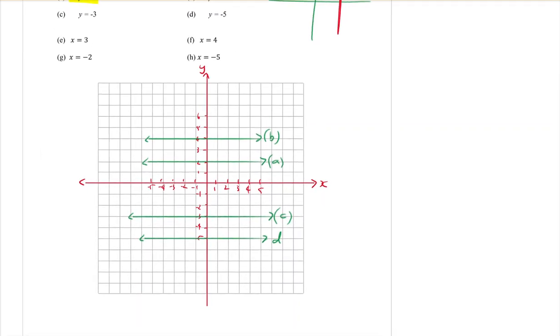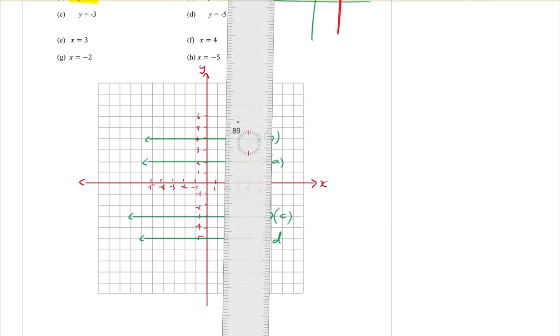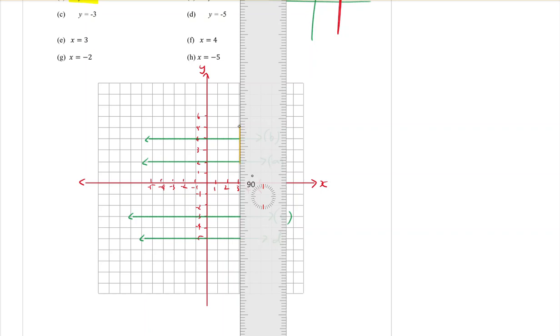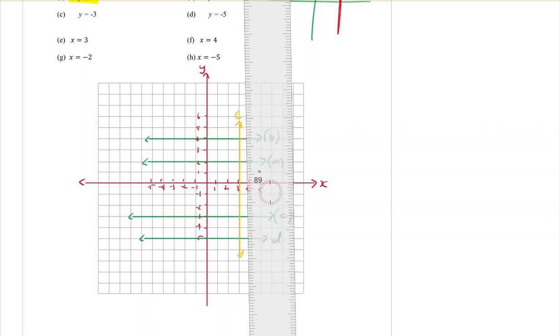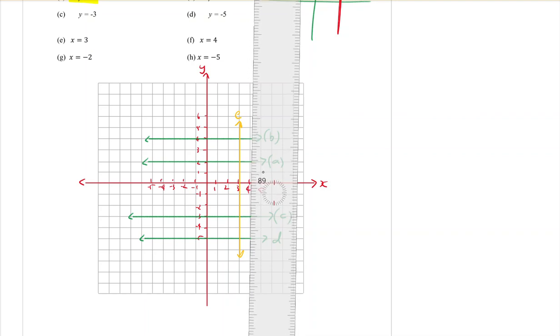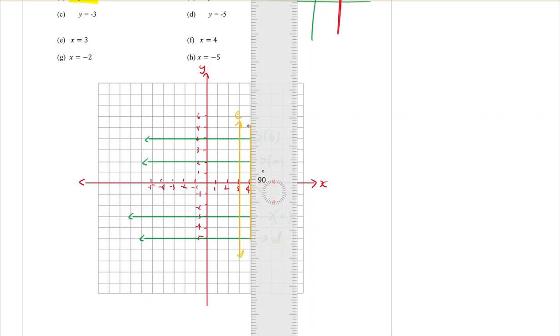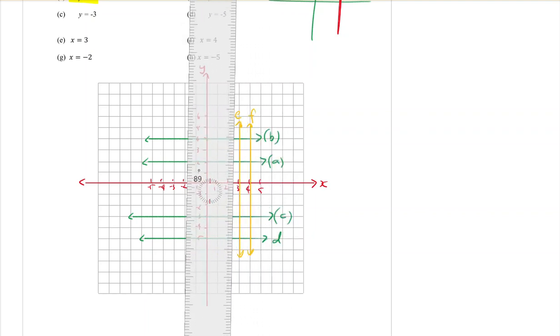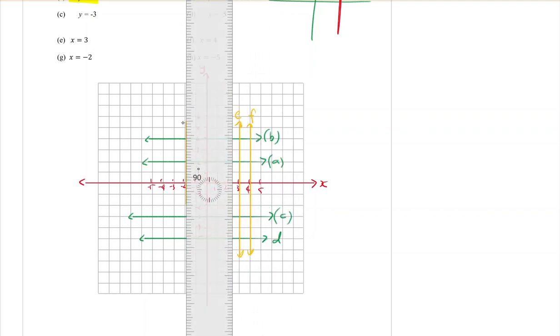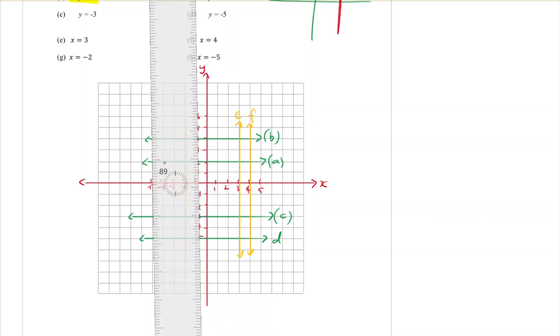But the next ones that we have to do, we're now changing to x equals. So we've got to turn the ruler around because we're going through the x axis now. The first one will be 3. So it's x equals 3 through the x axis at 3, and that's line E. Then f is x equals 4. g is x equals minus 2, so negative numbers going through the x axis at minus 2. And the last one is x equals minus 5.